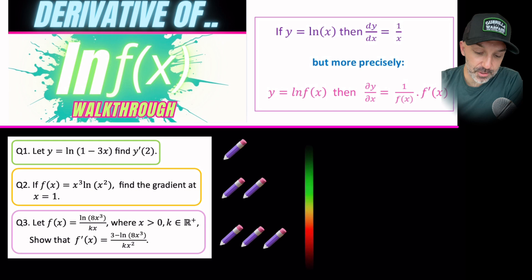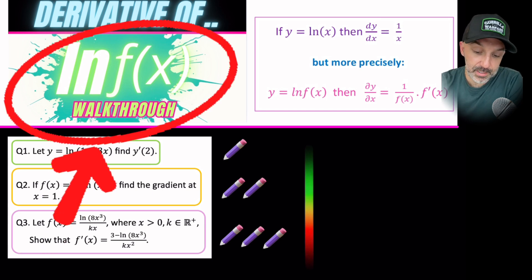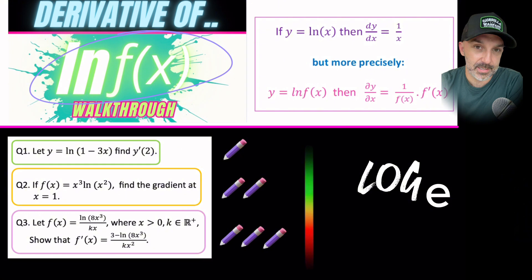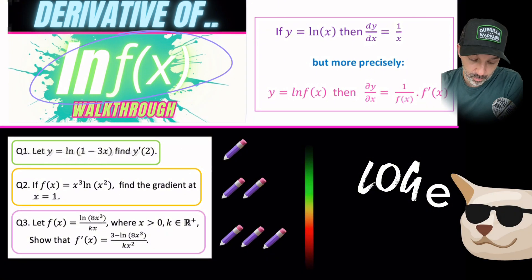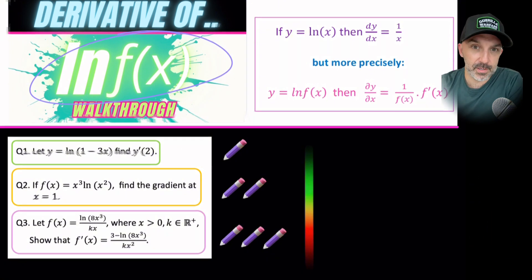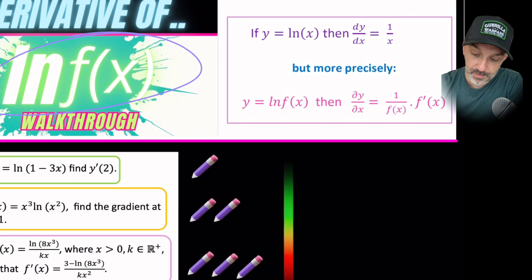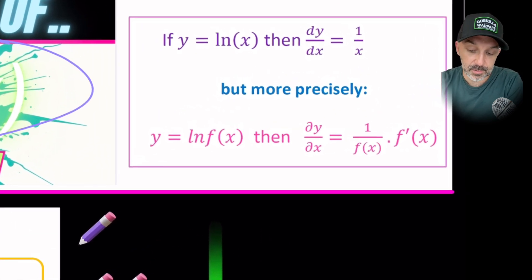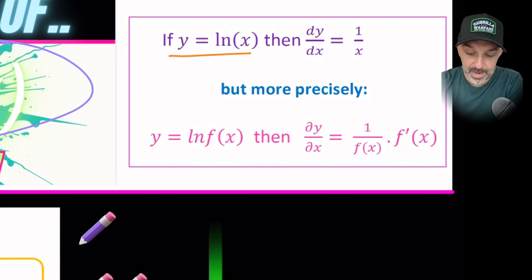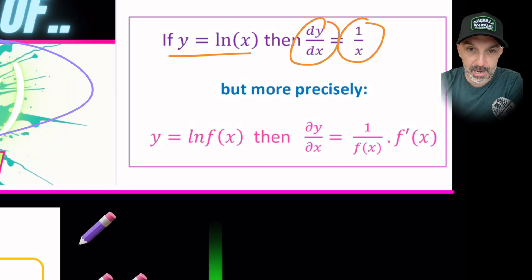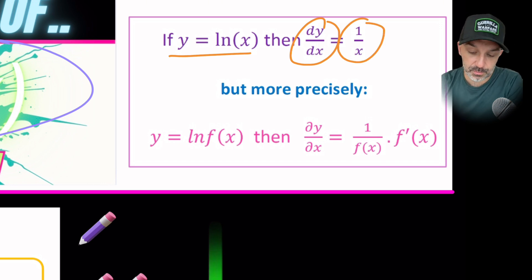Welcome back everybody. Today's differential calculus walkthrough will be dealing with natural log — that is log to base e. We'll do three questions involving natural log, and over to the right I've put a couple of reminders. If y is natural log x, then the derivative of y with respect to x is simply 1 over x. That will appear in your formula booklet, otherwise you'll need to remember it.